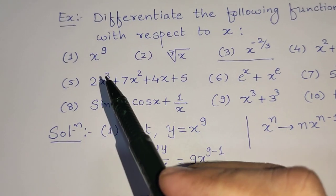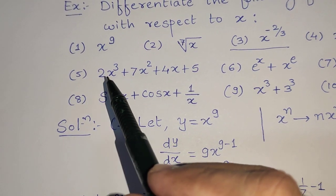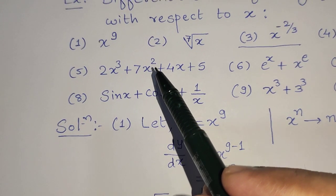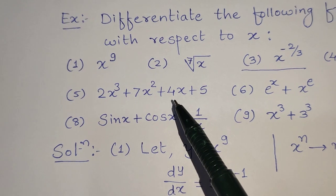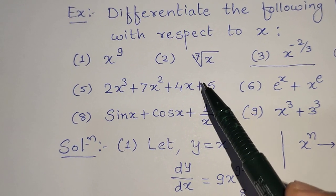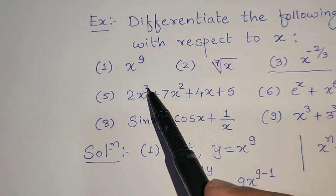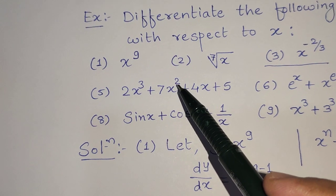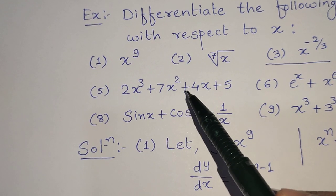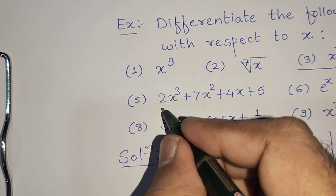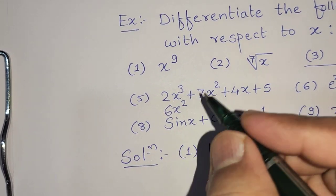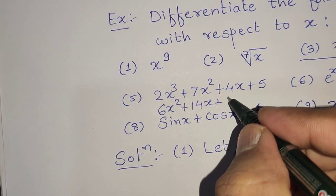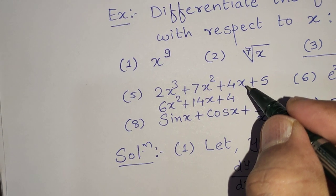For the fifth example, 2x cubed plus 7x squared plus 4x plus 5: the constant 2 stays outside and the derivative of x cubed is 3x squared; 7 stays outside and the derivative of x squared is 2x; 4 stays outside and the derivative of x is 1; 5 is a constant so its derivative is 0. The final answer is 6x squared plus 14x plus 4.